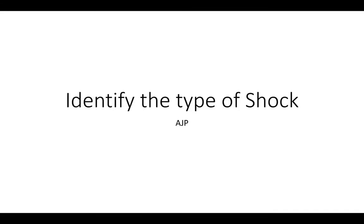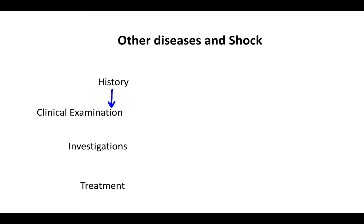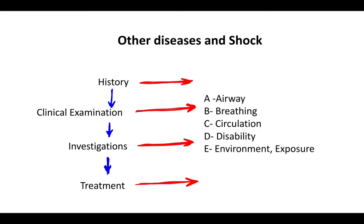In different types of shock, unlike other diseases where we sequentially go through history, clinical examination, investigations, diagnosis, and treatment, everything has to start simultaneously. We take the history of the patient, start resuscitation, and do investigations in between. During that process, we need to identify the type of shock.